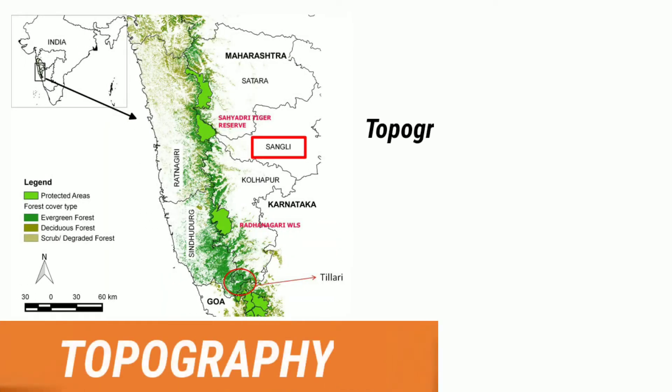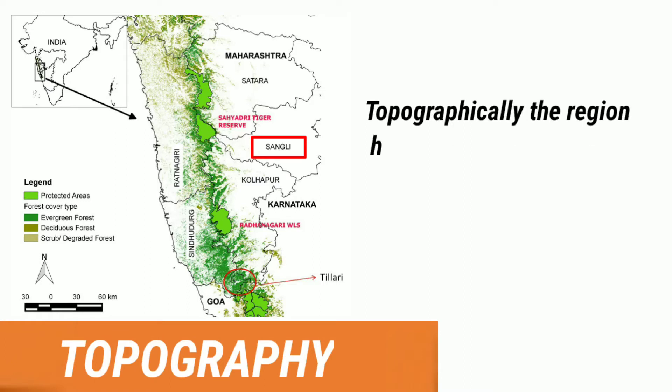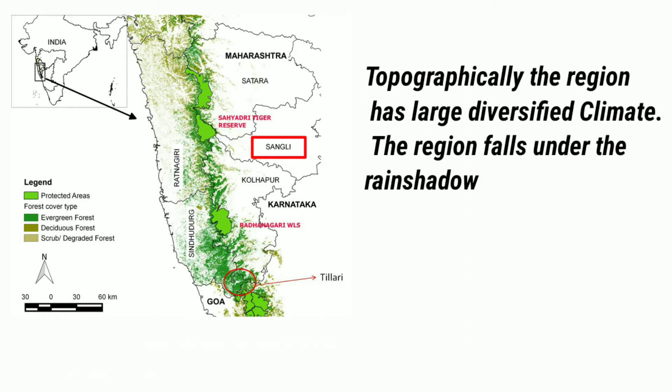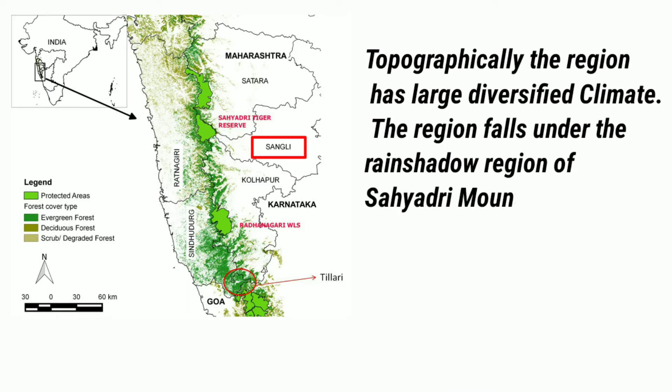Topography: Topographically, the region has a large diversified climate. The region falls under the rain shadow region of the Sahyadri mountain ranges.